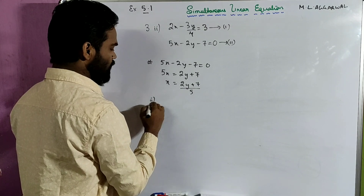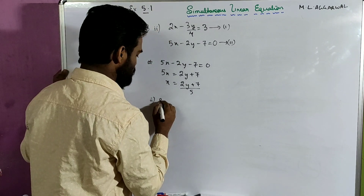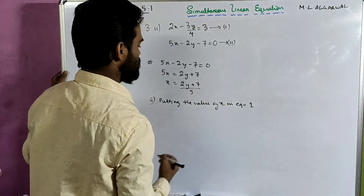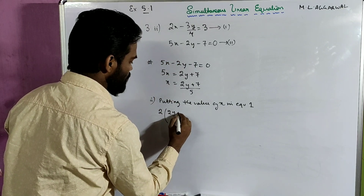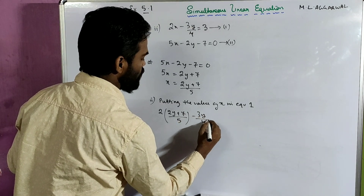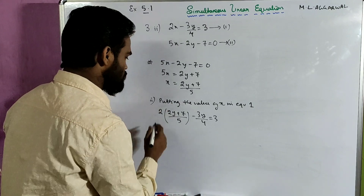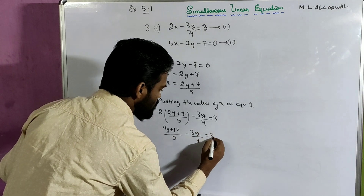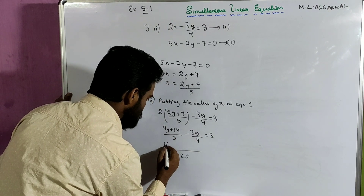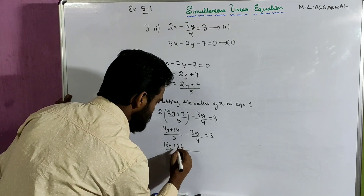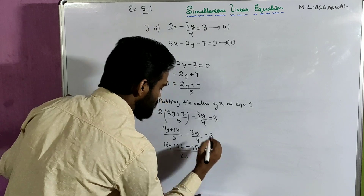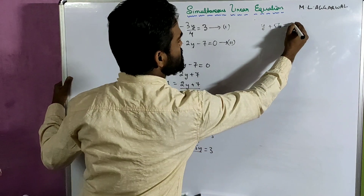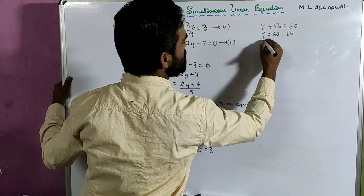Now I'll put this value in equation 1. Substituting the value of x in equation 1: 2 times (2y plus 7 by 5) minus 3y by 4 equals to 3. That's the linear equation in one variable. This gives (4y plus 14) by 5 minus 3y by 4 equals to 3. Multiplying through, this becomes 16y plus 56 minus 15y equals to 60, over a common denominator of 20. So 16y minus 15y gives y, and y plus 56 equals to 60, so y equals to 4.